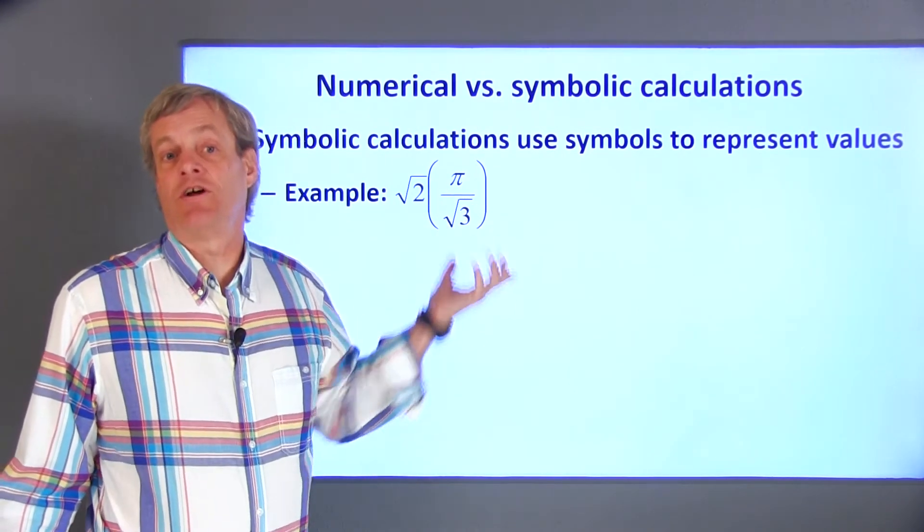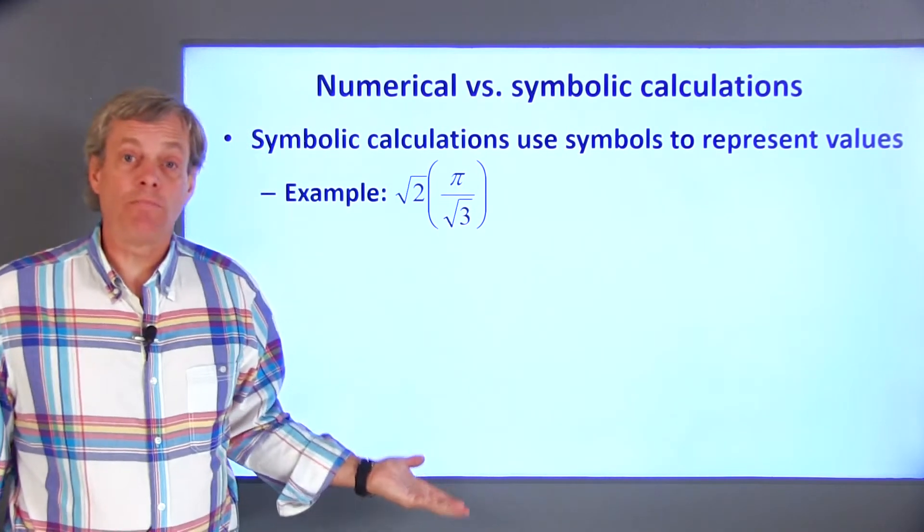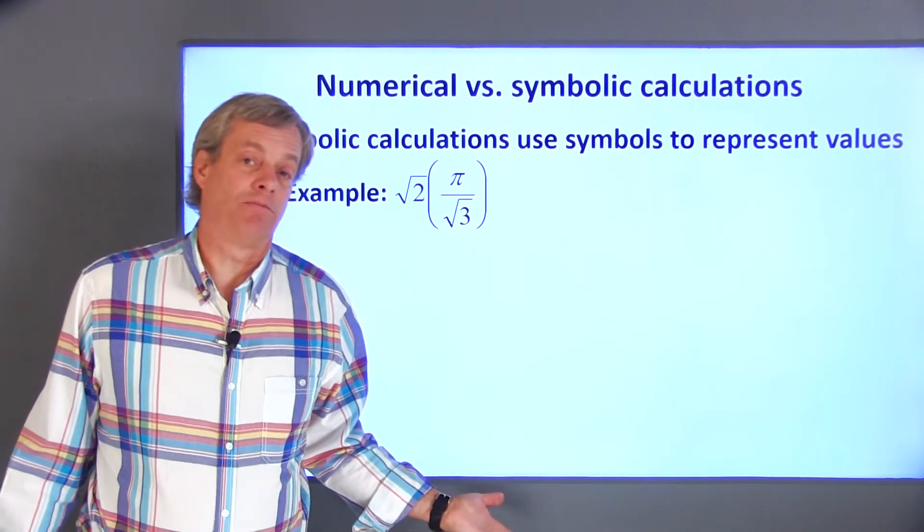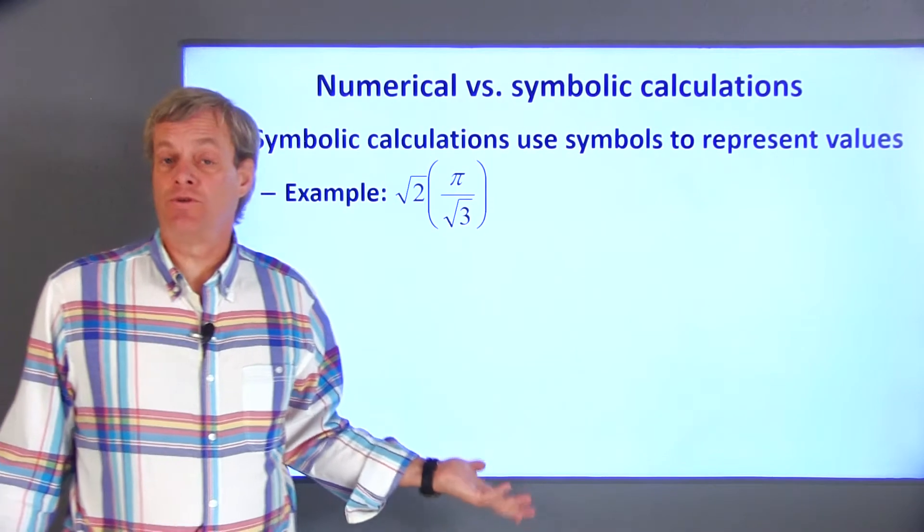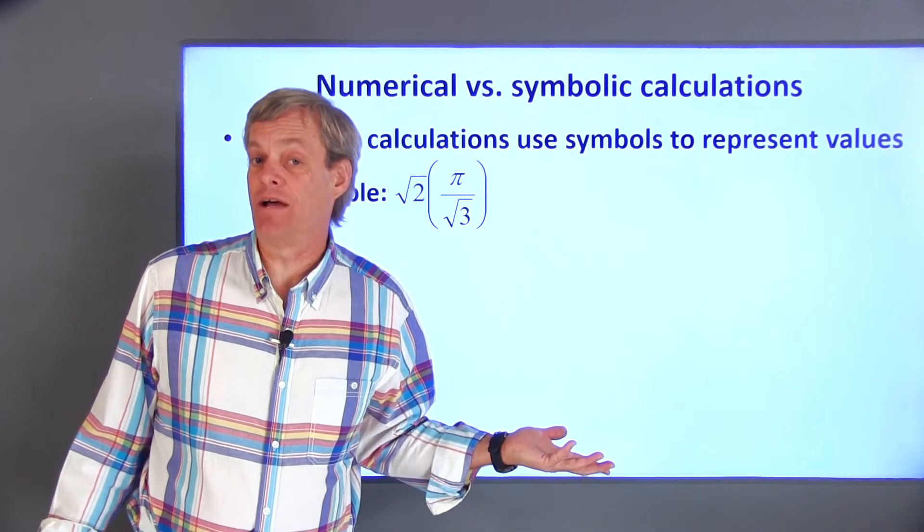All the numbers in this expression are irrational and can't be represented exactly in a base 10 numbering system. So, symbols are used to represent the numbers and the expression is exactly correct.